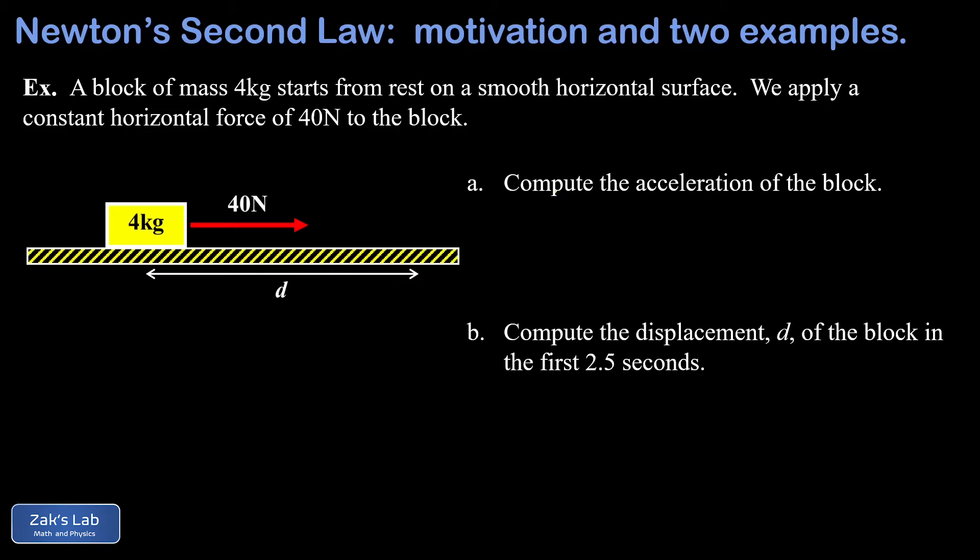In part A, we're asked to compute the acceleration of the block, so we can write down Newton's second law in the form A equals F net over M. But because we're in a one-dimensional setting, we can keep track of the direction of vectors by using plus and minus signs, and because there's only one force, we don't really have to write F net. So I can drop the formality with the vectors and just say A equals F over M. Now if we treat that force as positive, A will come out positive, in other words pointing to the right. Plugging in our numbers, we have a 40 newton force divided by a mass of 4 kilograms, and we arrive at an acceleration of 10 meters per second squared.